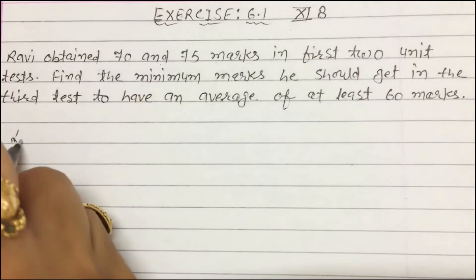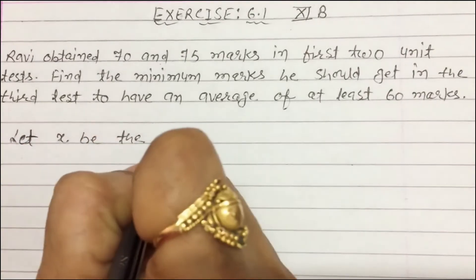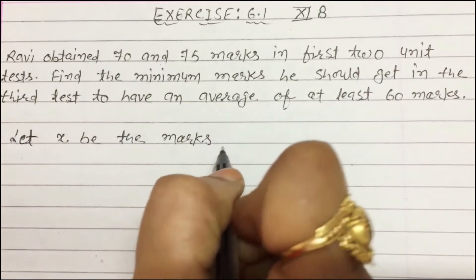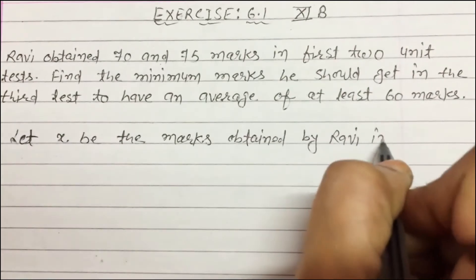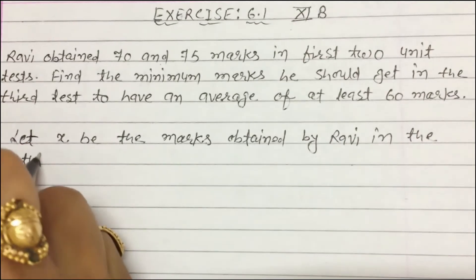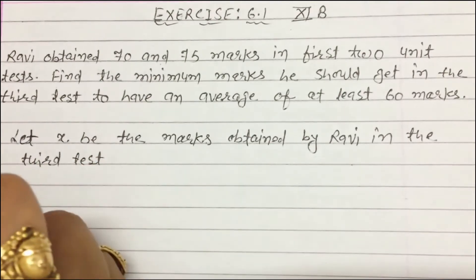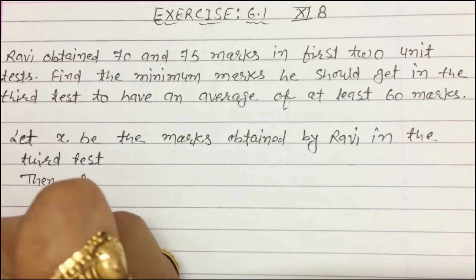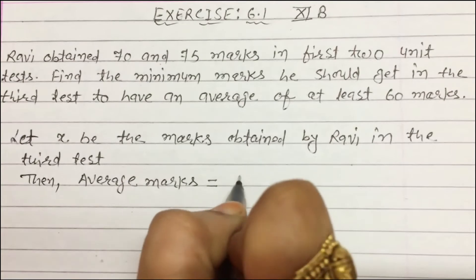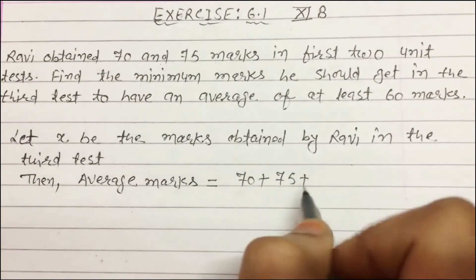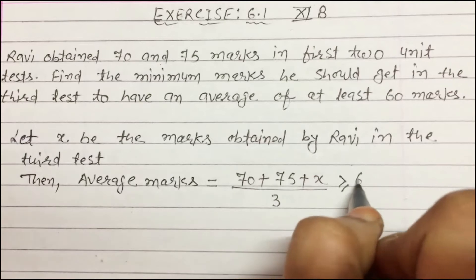First of all, let x be the marks obtained by Rabbi in the third test. It is given that the average of these three tests, so average marks: (70 + 75 + x) / 3 ≥ 60.